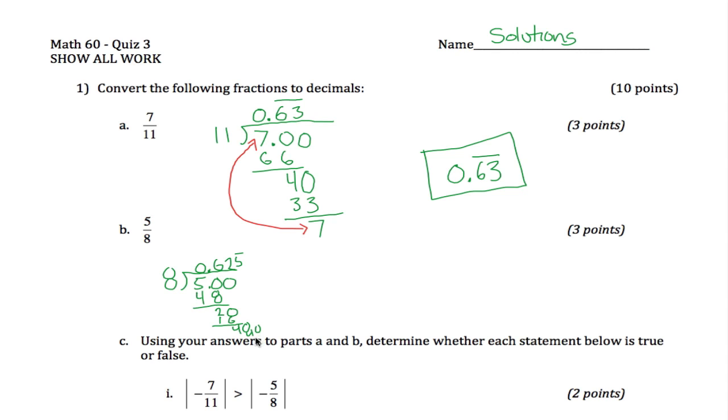Because 8 goes into 40 exactly 5 times, we put another 40 down here, and then we get 0 for our remainder, which is good. What we get is 5 eighths is exactly 0.625. This decimal doesn't repeat, it's an exact answer. So we get 0.625 is our answer.